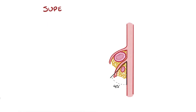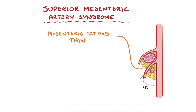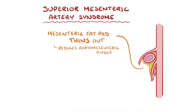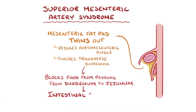In superior mesenteric artery syndrome, the mesenteric fat pad starts to thin out, which reduces the aorto-mesenteric angle, allowing the aorta and superior mesenteric artery to pinch down on the transverse duodenum. This blocks food from passing from the duodenum to the jejunum, and the backup of food leads to intestinal obstruction.